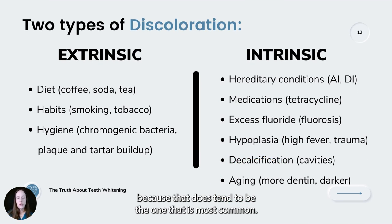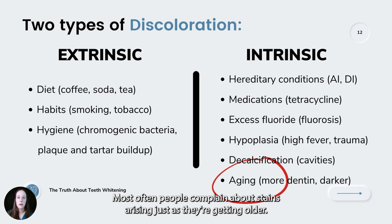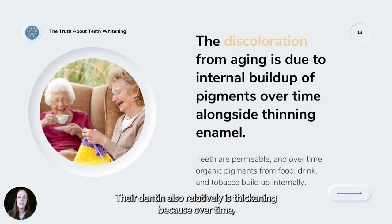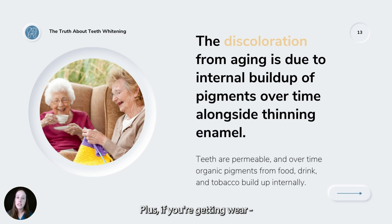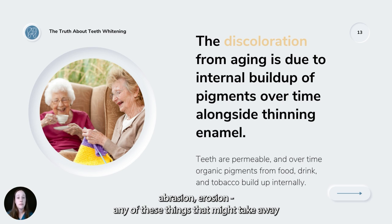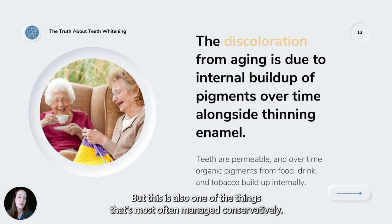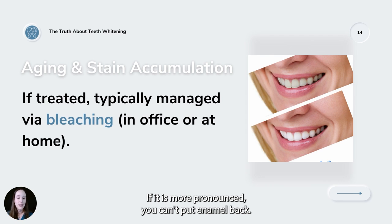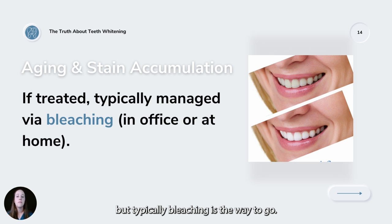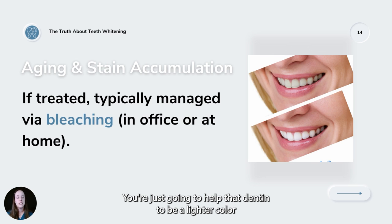The most common intrinsic stain is from aging. As we get older, enamel thins and dentin relatively thickens because with micro traumas over time, the dentin puts down more material to protect the pulp. More dentin means more yellow color. Plus, wear, abrasion, and erosion take away enamel, so the underlying dentin color shows through more. This is most often managed conservatively through bleaching, though veneers or crowns are an option if more pronounced. You can't put enamel back, so bleaching just helps lighten the dentin color.